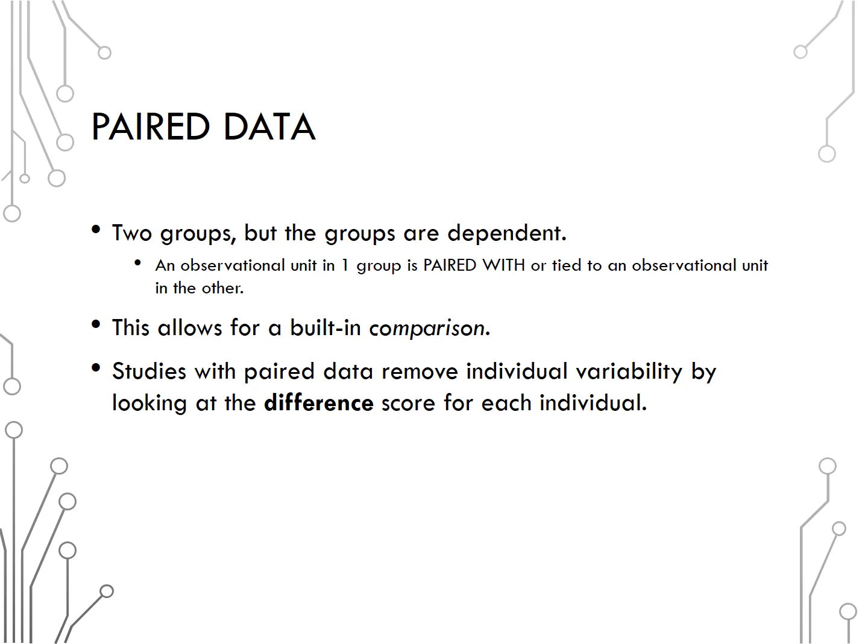However, something like height and weight of an individual are two measurements on the same person, which sounds like it's paired data. But the difference between an individual's height and weight is not a meaningful number. Those values are not measured on the same scale. So this type of data would be analyzed differently.